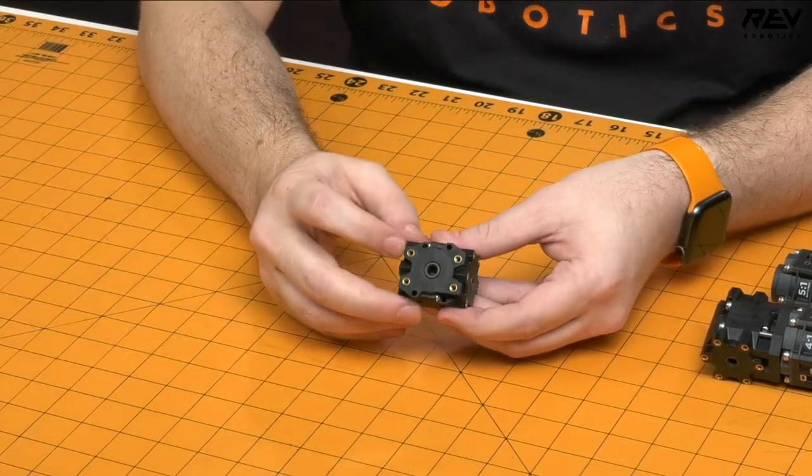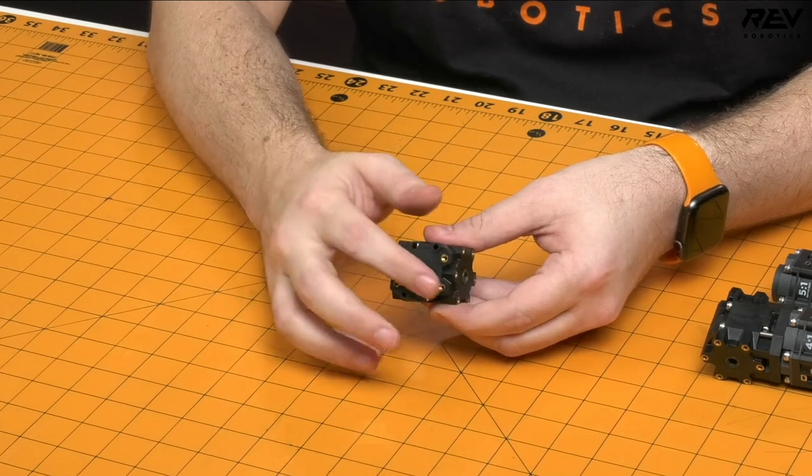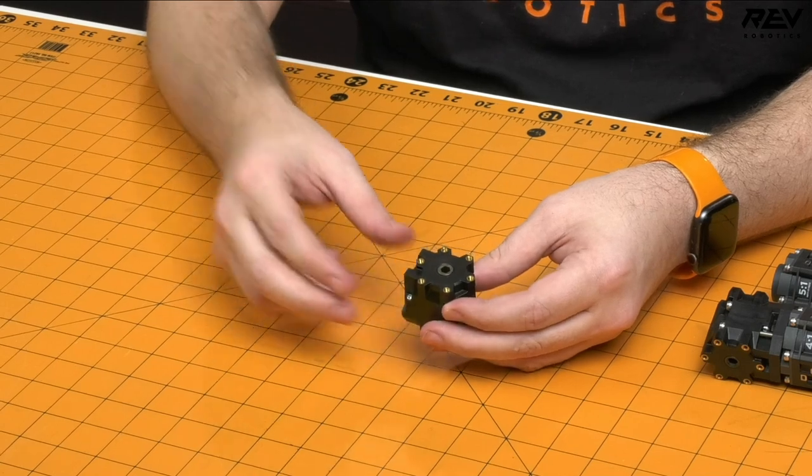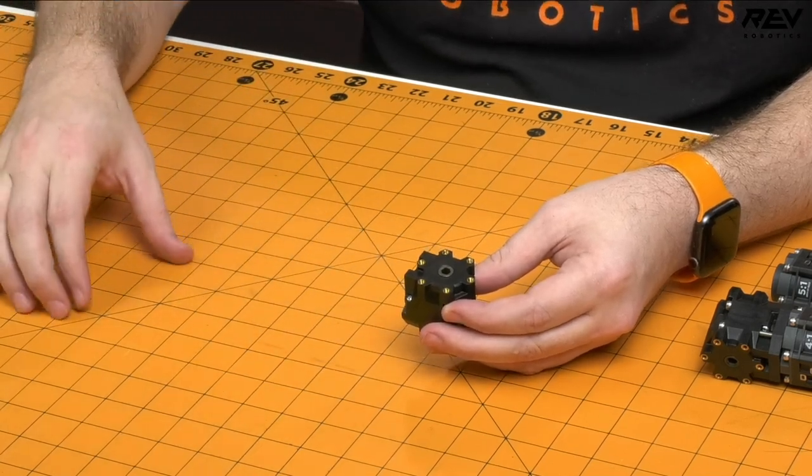You'll also notice that we feature mounts on the back sides so that you can mount this independently for things like intakes or things where you might want to put the motor totally remote of this gearbox.